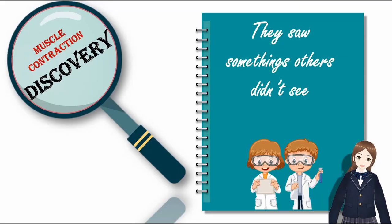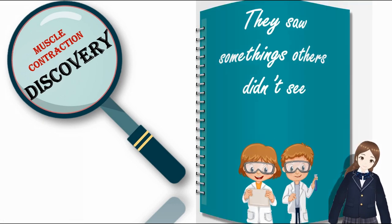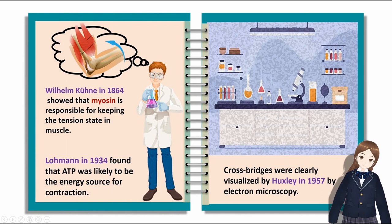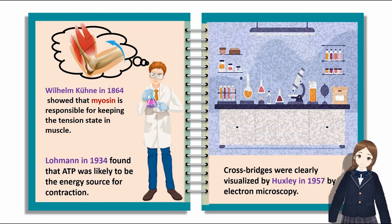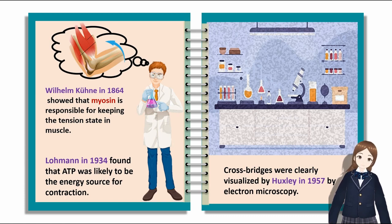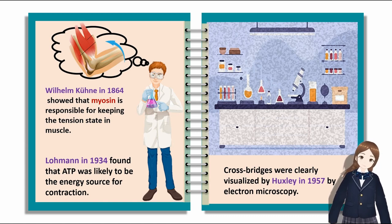Muscle contraction discovery. Wilhelm Kuhne in 1864 showed that myosin is responsible for keeping the tension state in muscle. Lohmann in 1934 found that ATP was likely to be the energy source for contraction. Cross bridges were clearly visualized by Huxley in 1957 by electron microscope.